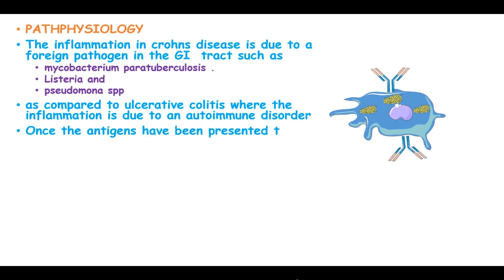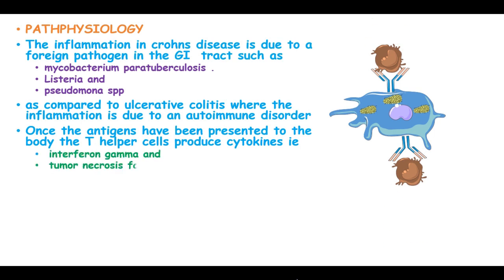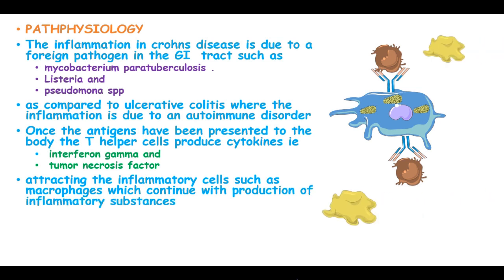Once the antigens have been presented to the body, the T helper cells produce cytokines such as tumor necrosis factor alpha and interferon gamma. These cytokines attract inflammatory cells such as macrophages, which continue the production of inflammatory substances.